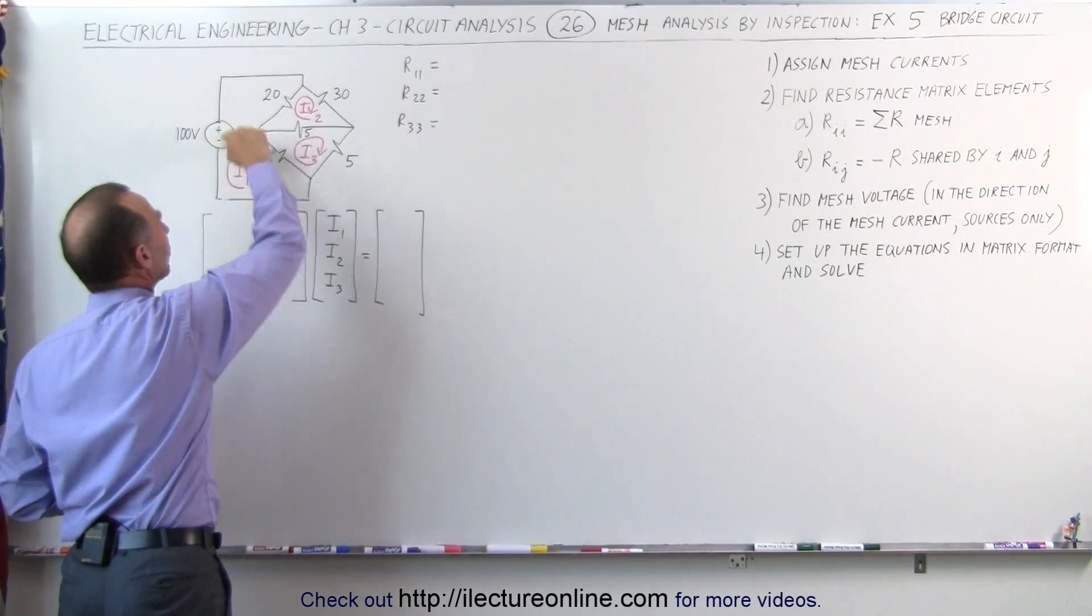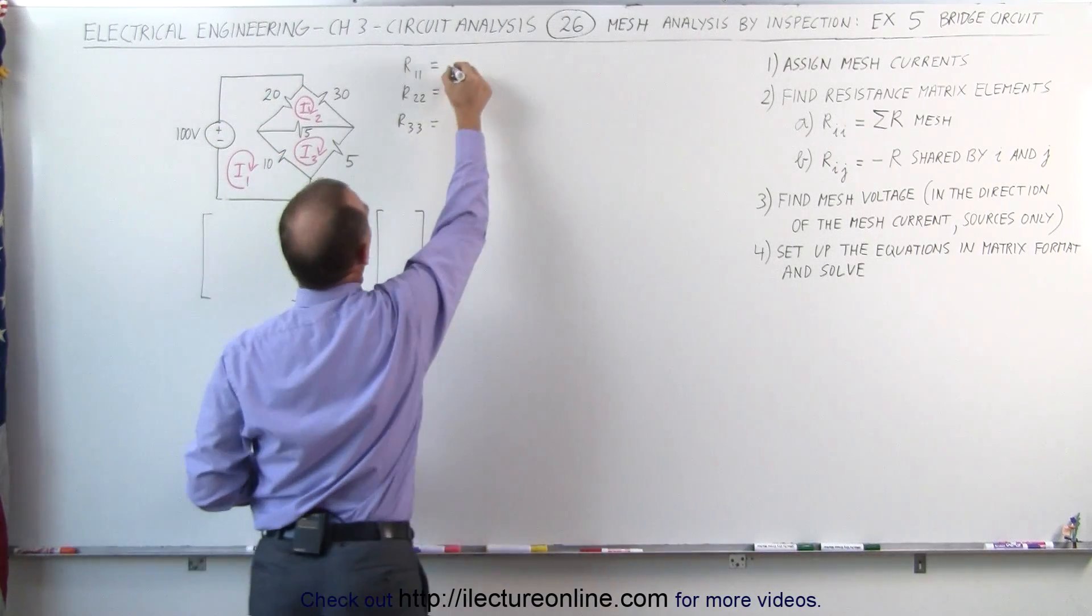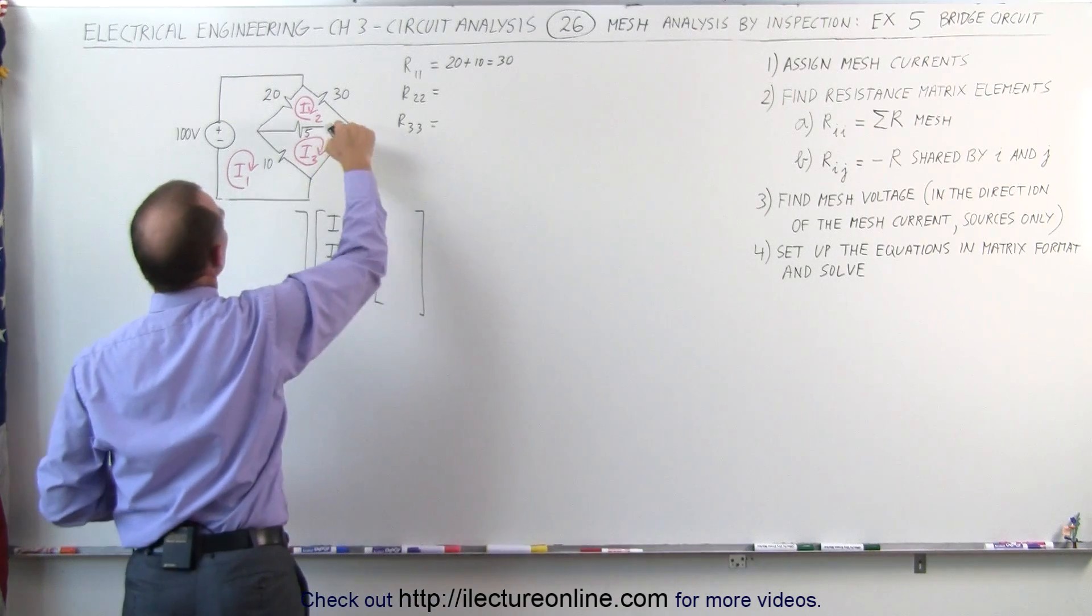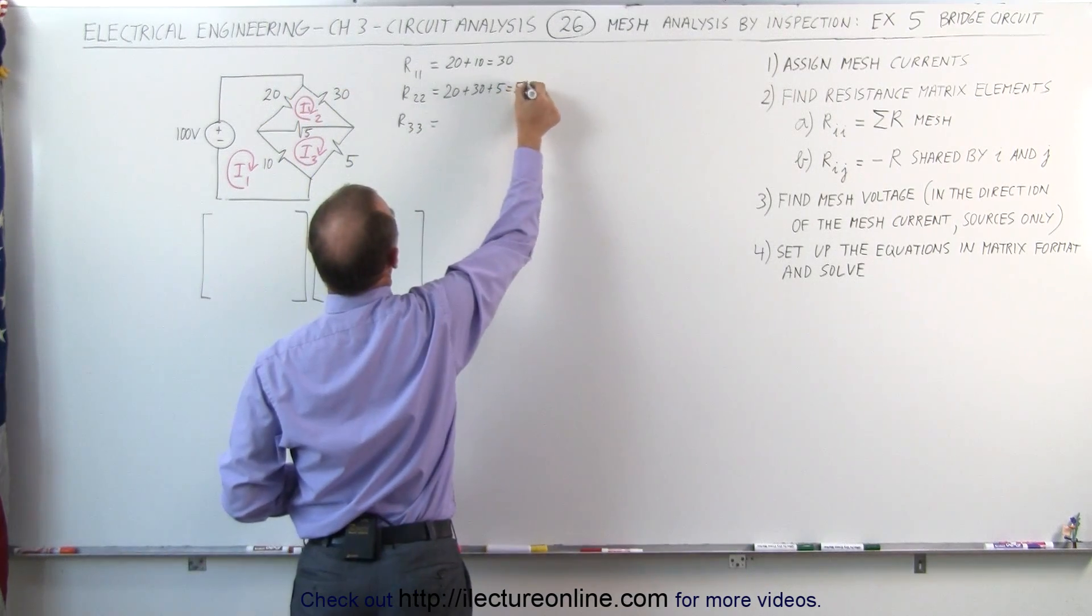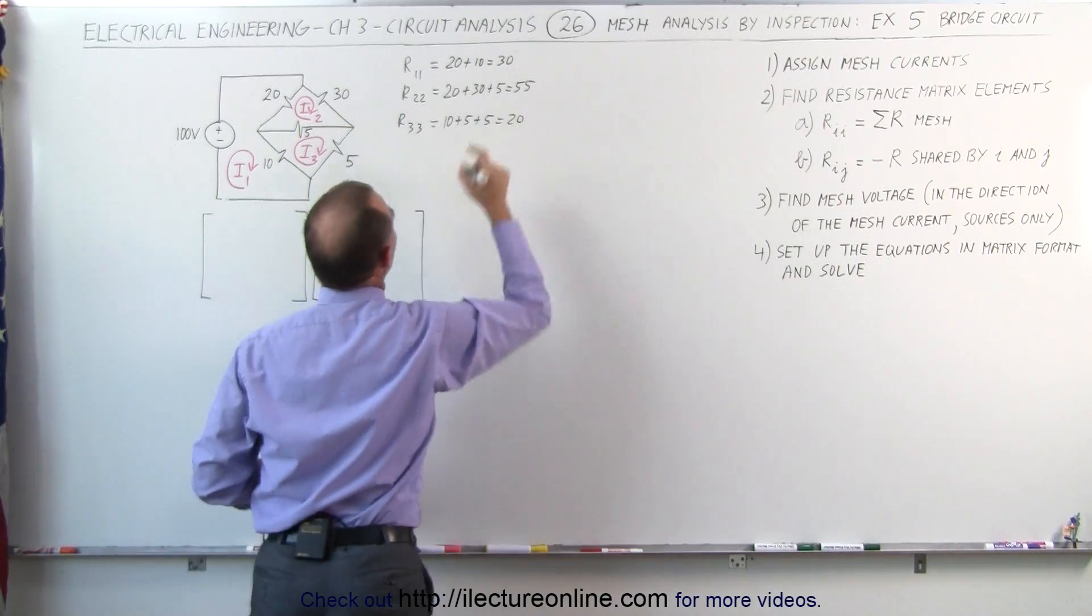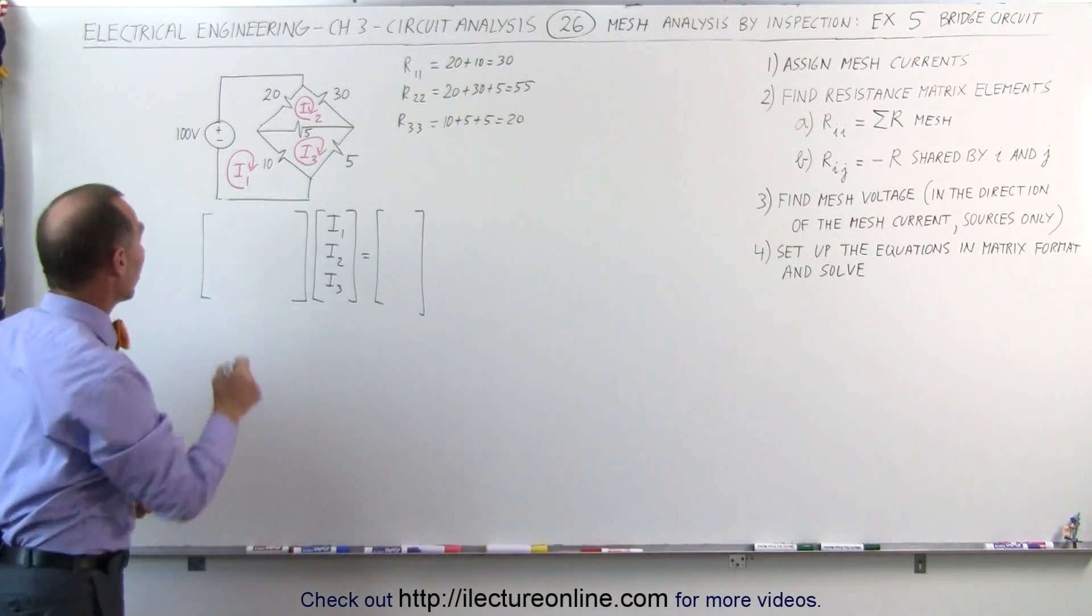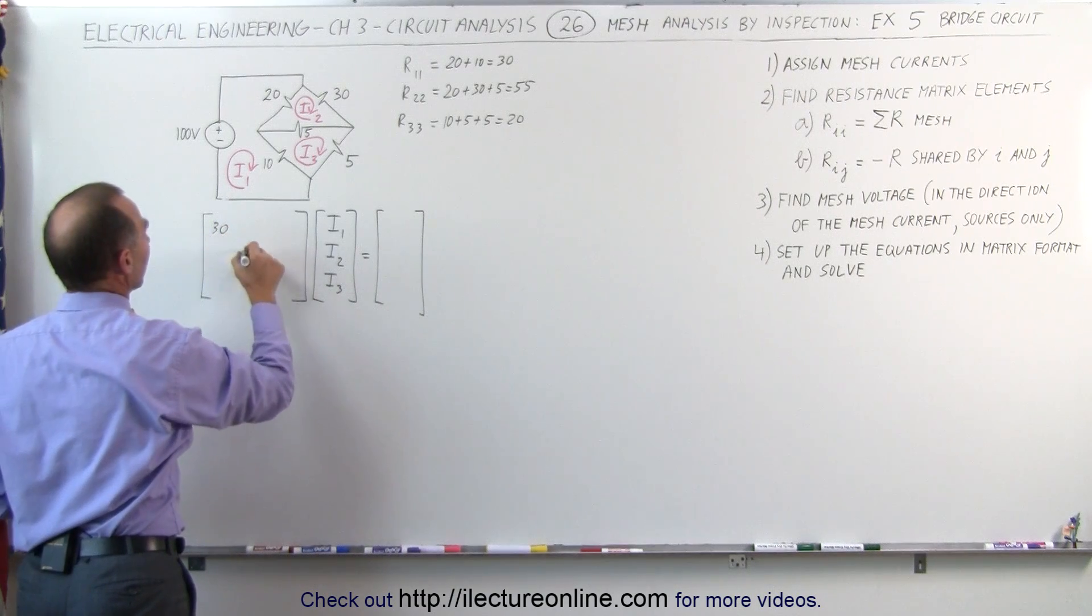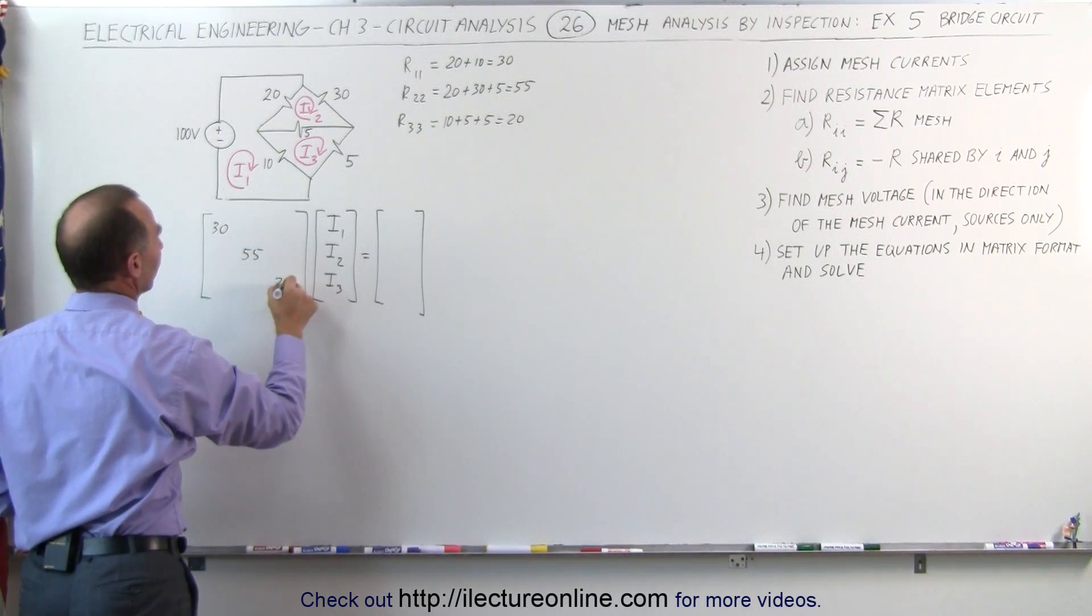That means we need to add up all the resistances around each loop. Loop one or mesh one, we have a total of 20 plus 10. Around loop two, we have 20 plus 30 plus 5, which is 55. And around the third loop, 10 plus 5 plus 5 is 20. That means the three diagonal elements are 30, 55, and 20.